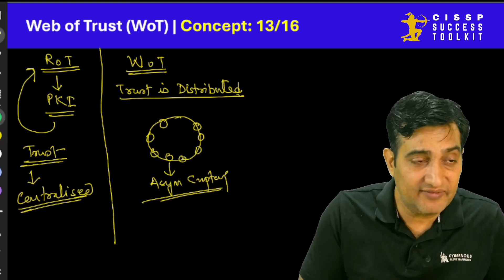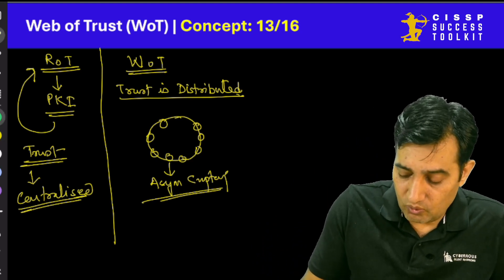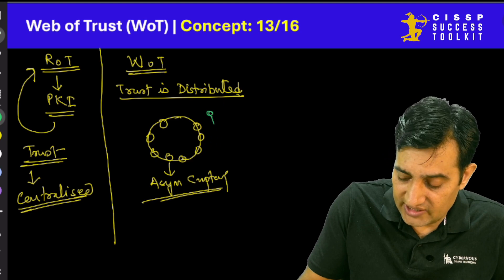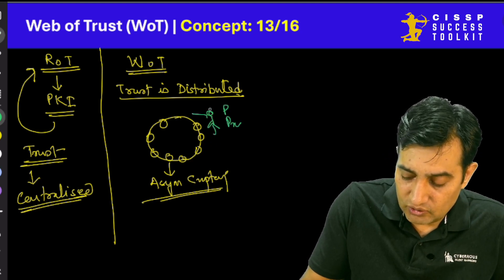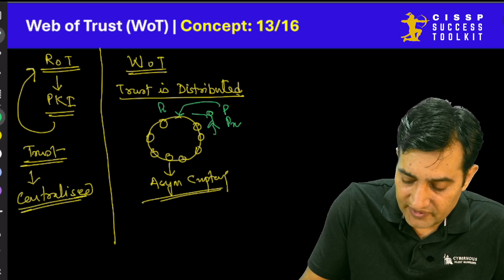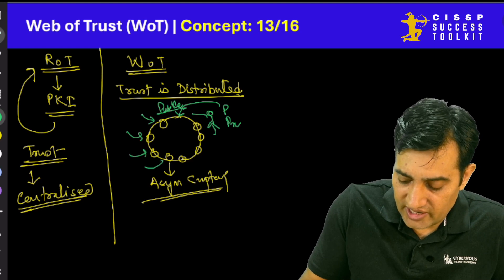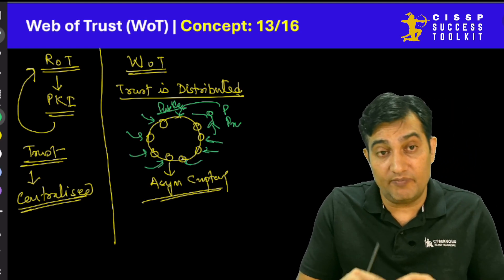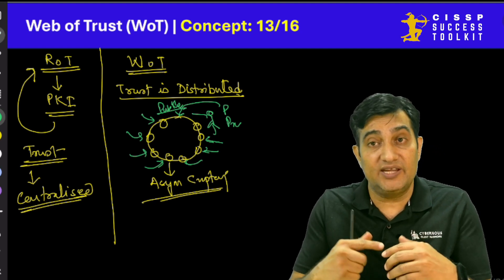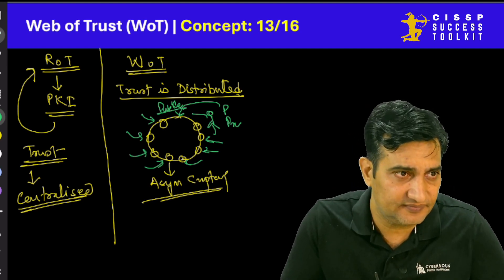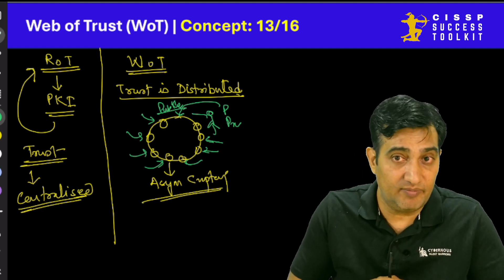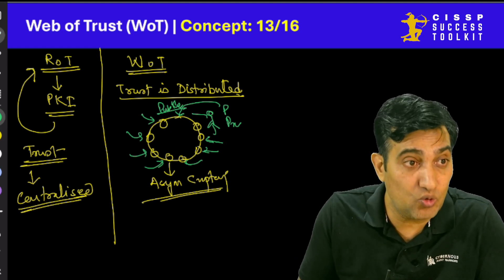In web of trust, we do not have a CA. Instead, when a new guy joins, he has a public key and private key. He will publish his public key, and this public key will then be signed by different users. The more people sign this particular public key, the more that public key can be trusted.